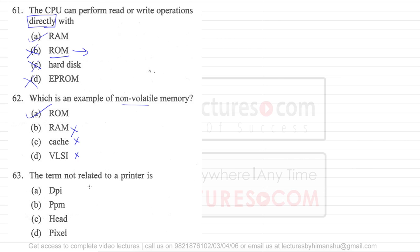Now question number 63 says the term not related to a printer. Now here we have DPI, PPM, head and pixel. So this DPI is dots per inch. DPI is related to a printer.